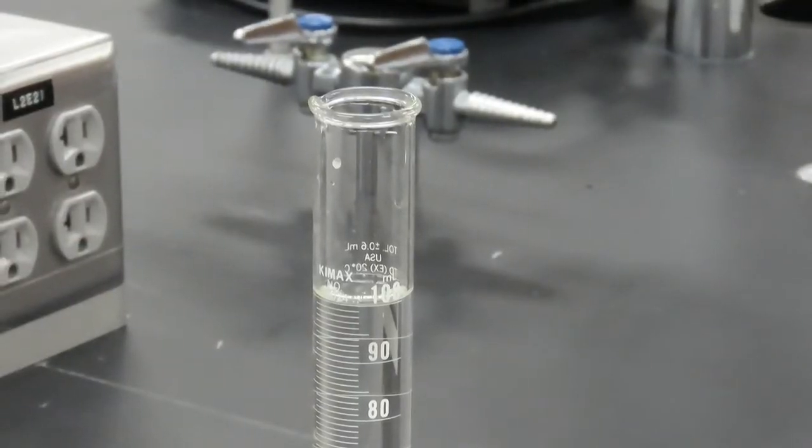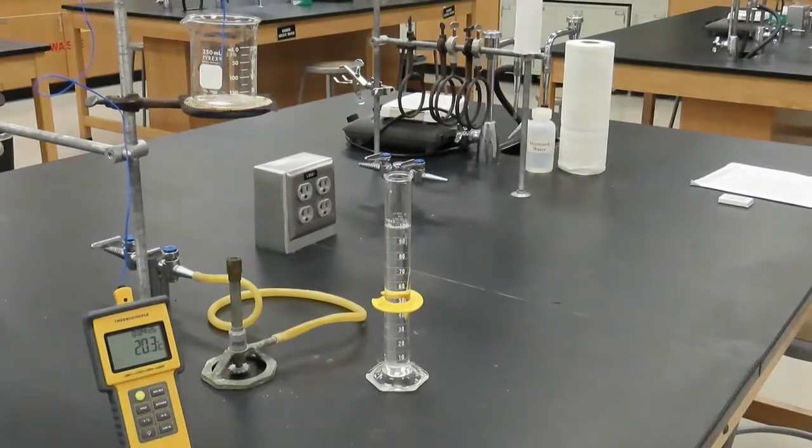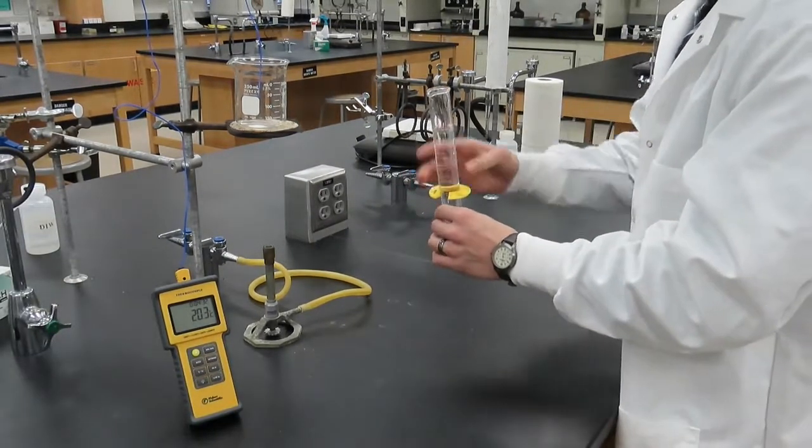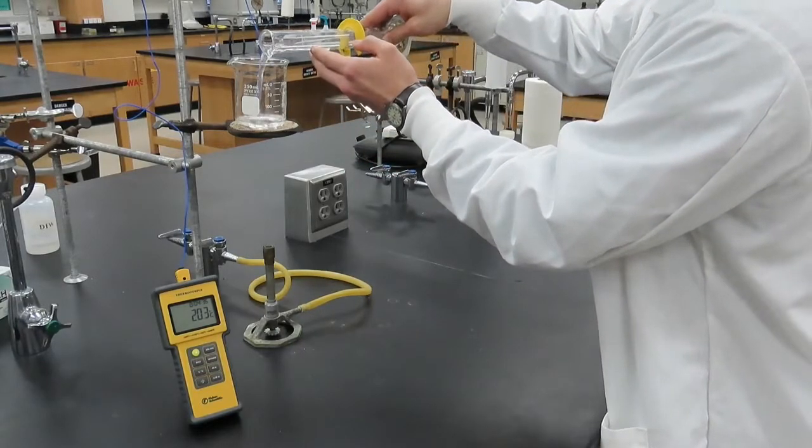To demonstrate the differences in flame temperatures, we heated 100 milliliters of deionized water in a beaker held about eight inches above the burner and monitored the temperature change of the water after five minutes of heating.